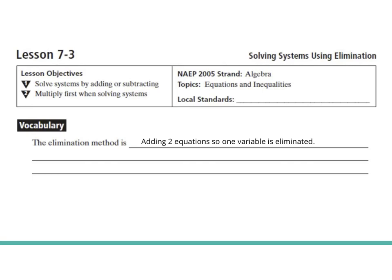The elimination method is adding two equations so one variable is eliminated. Technically, we're adding negatives, and I'll talk about that in a second.